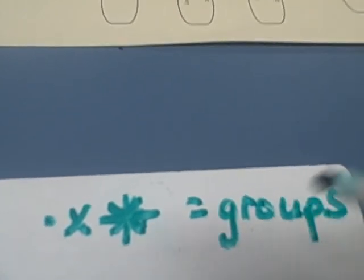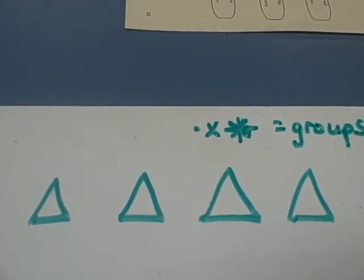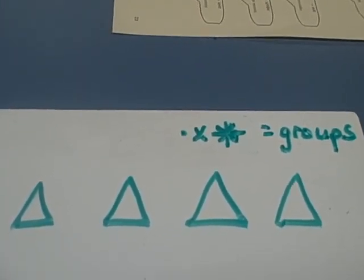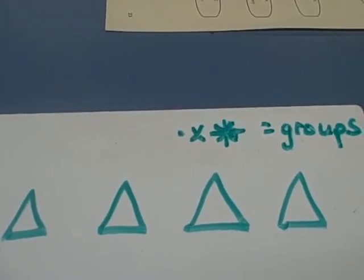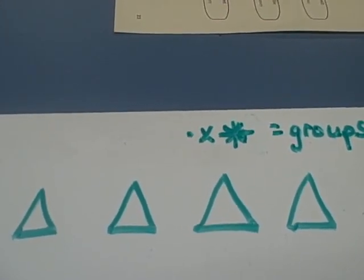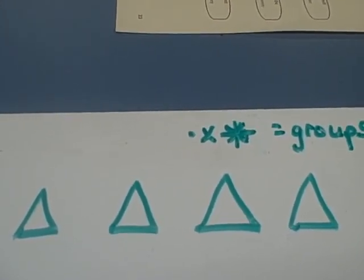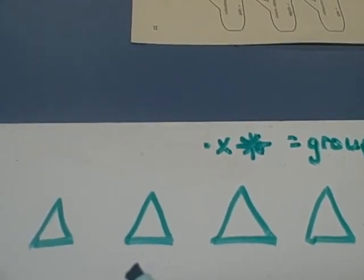And now our task is to take this picture of these four triangles and to make a multiplication problem out of it. First, in order to know what I'm doing, I have to figure out where my groups are.